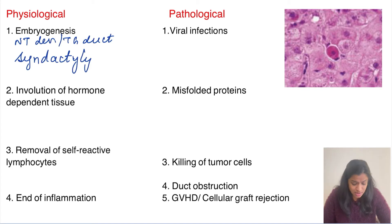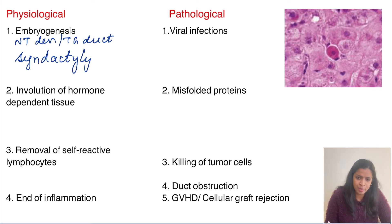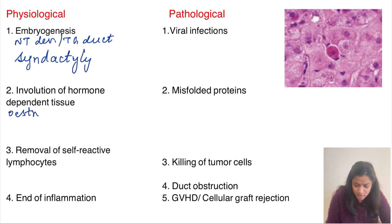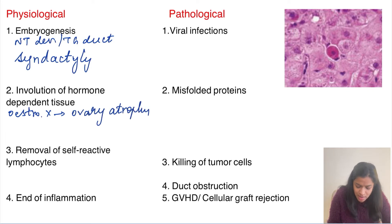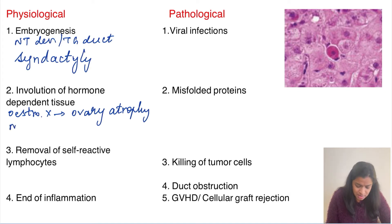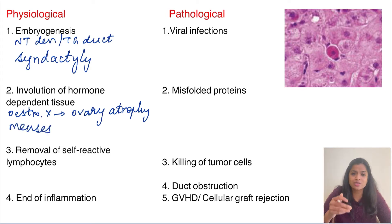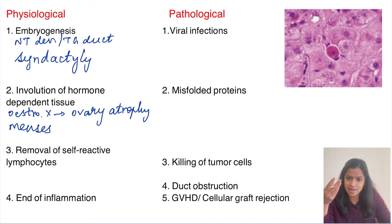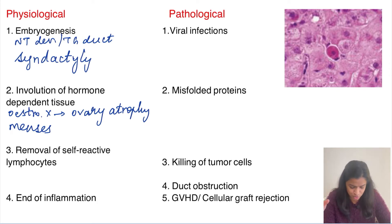The next example is involution of hormone-dependent tissue. In a post-menopausal female, there is no estrogen, so the ovary and breast undergo atrophy — this happens because of apoptosis. Another normal example is menstruation: during menses, endometrial shedding occurs, and those endometrial cells die and are shed off because of apoptosis.